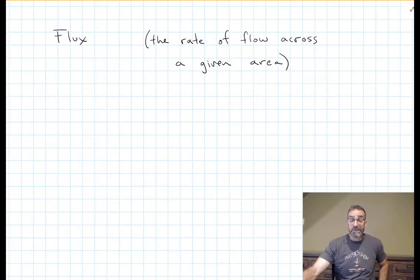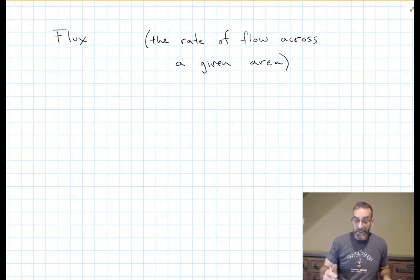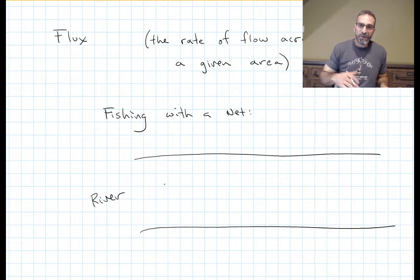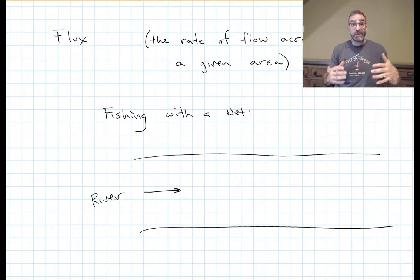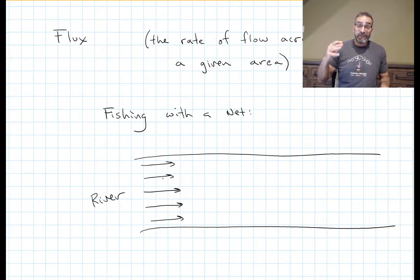Before we discuss Gauss's law, we need to introduce a term we call flux. Flux is basically a flow rate across an area, but it depends on a few different variables. I like to use this analogy: fishing in a river with a net. If we have a river — and just to keep things simple, let's have our water flow be uniform across the whole river, the same flow rate across the whole river — and you're going to put your fishing net in there.